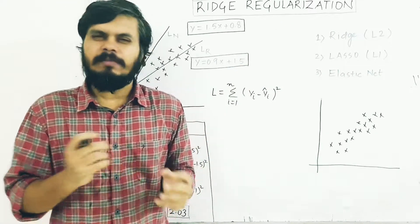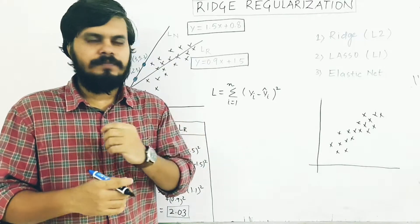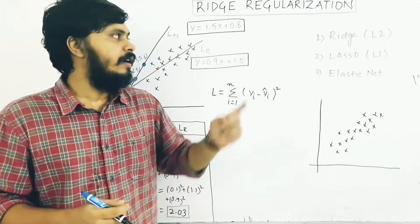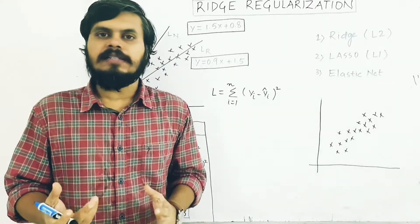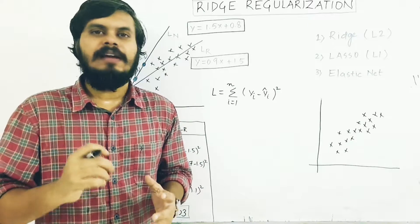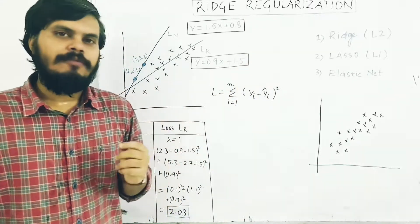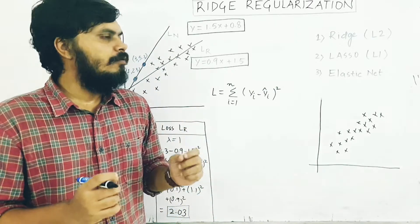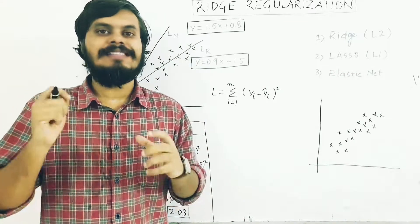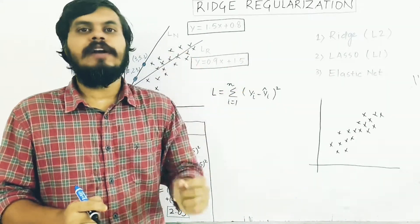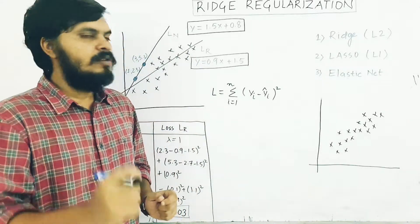The structure of this video will be as follows: first we'll go through the whiteboard for the geometry and intuition behind ridge regularization. Then we will apply it on a toy dataset with some code using built-in classes. Finally in the third part of the video we will plot certain graphs and prove that when you use regularization, overfitting reduces. That is the entire flow.